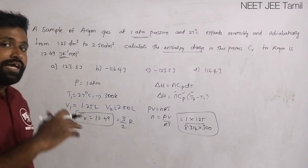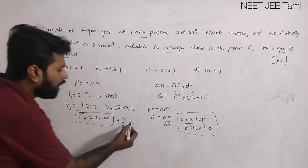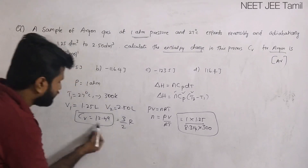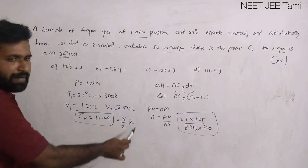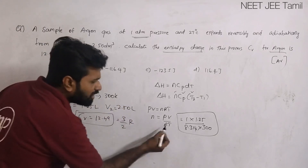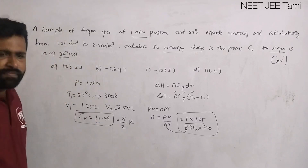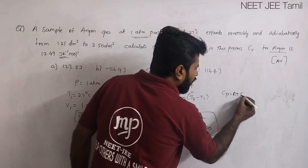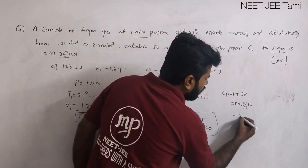For a monatomic gas, Cv is equal to 3/2 R. R is 8.314, so 3/2 times 8.314 gives approximately 12.49 joule per kelvin per mole. Then Cp equals R plus Cv, which is R plus 3/2 R, giving Cp equal to 5/2 R.